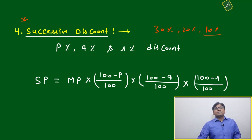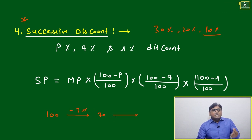What happens here is the basis keeps reducing. First, you apply 30%. Suppose 100 was the marked price - 30% means minus 30, so it becomes 70. Now this 20% will be calculated based on 70, not 100.